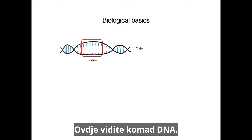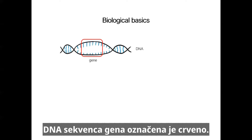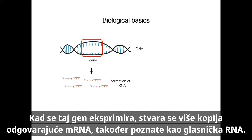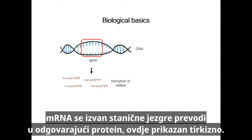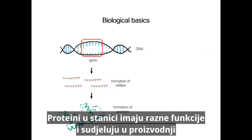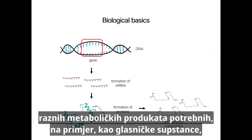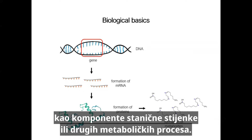To understand what is meant by the unintended formation of new gene products, a few biological basics are needed. A piece of DNA contains the sequence of a gene. When this gene is expressed, several copies of the associated mRNA — also known as messenger RNA — are created. An mRNA carries the genetic information for the generation of the associated protein. The mRNAs are translated outside the cell nucleus into the corresponding protein. Proteins have a variety of functions in the cell and are involved in the production of various metabolic products required, for example, as messenger substances, components of the cell wall, or in other metabolic processes.